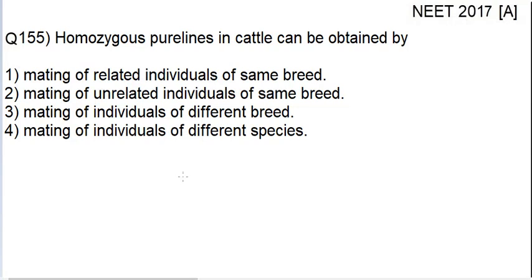Hello students. In this video lecture we will be discussing question number 155 of the ME 2017 question paper. The question is: homozygous pure lines in cattle can be obtained by (1) mating of related individuals of same breed, (2) mating of unrelated individuals of same breed, (3) mating of individuals of different breeds, (4) mating of individuals of different species.